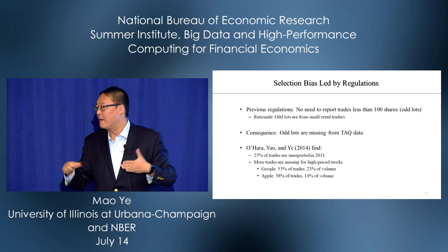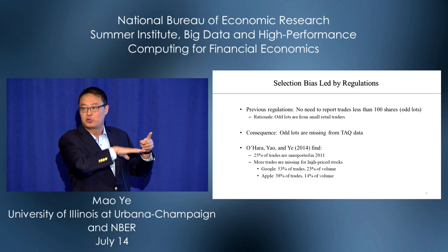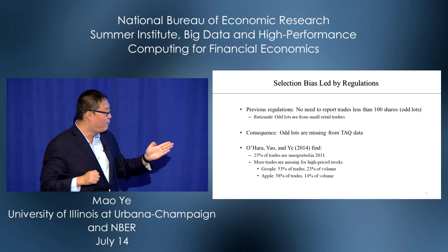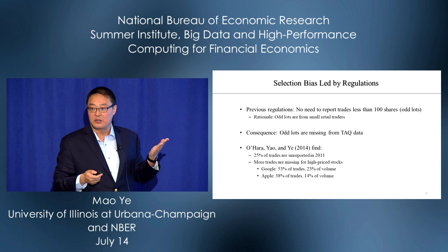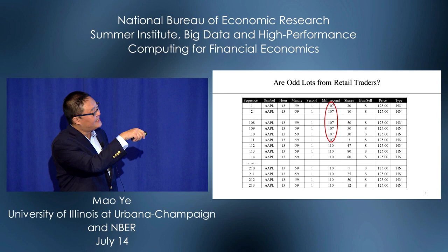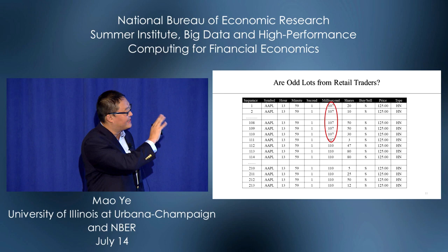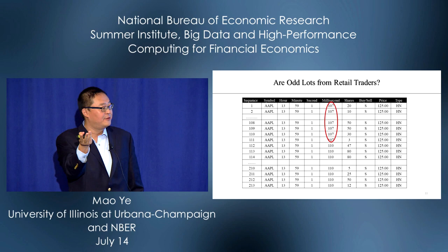Is that a big deal? Yes — 25% of observations are truncated. Especially for high-price stocks: for Google it's 53%, for Apple it's 38%. But are these coming from retail traders? Look at this pattern: a series of 111 trades, each unreported, all happening within one millisecond — a small example from NASDAQ. Can retail traders do that? I cannot trade 111 times in one millisecond.